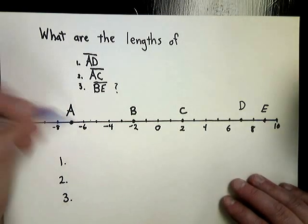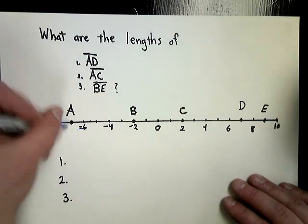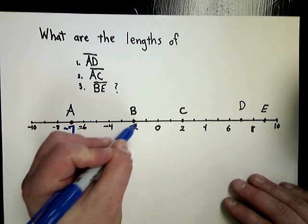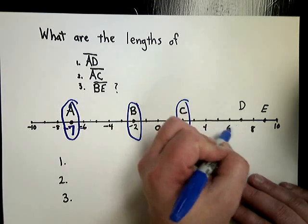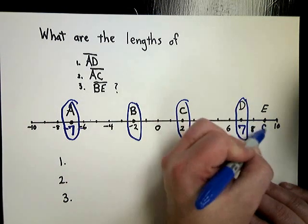So if I know that this is between negative six and negative eight, and it's on the dot, or on the little tick mark, which it should be, this is actually at negative seven. B is on negative two, of course. I'm going to go ahead and circle them to show myself. This is on two. This is between six and eight, so that would be seven. And this is between eight and ten, so that would be nine.